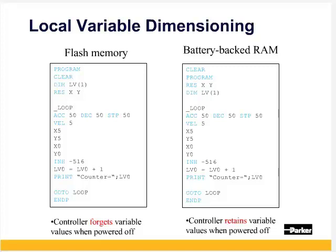Here on the right, LV0 is a count variable that increments with every completion of the square. Pause the video and try adding this to your program.